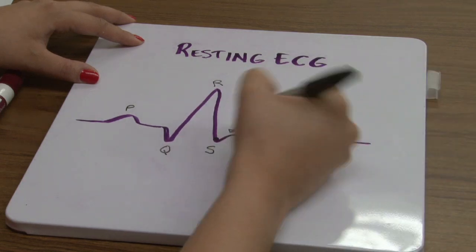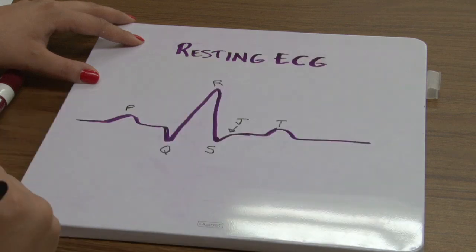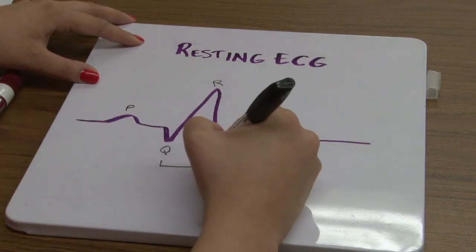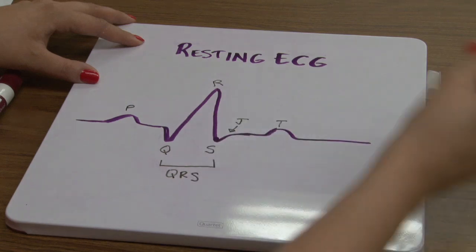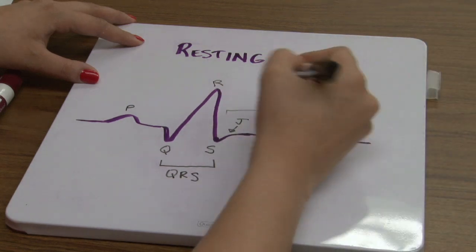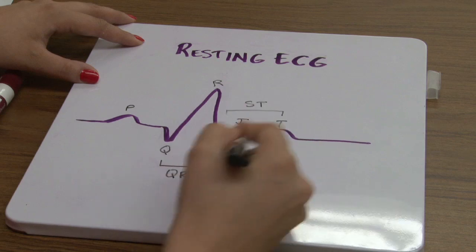And we'll also be looking at the J point. We'll also be examining changes in the QRS segment, and then also in the S to T segment.